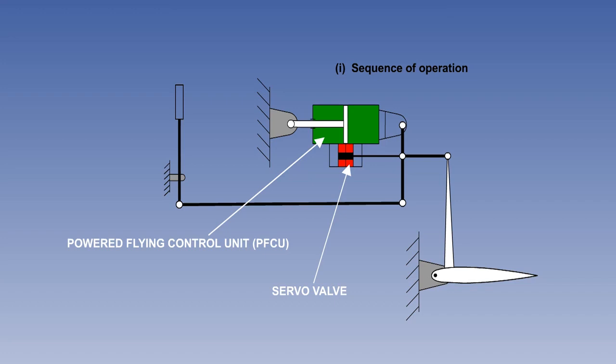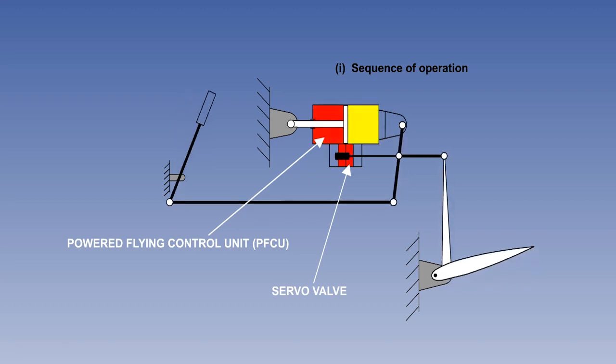These first few animations merely show the sequence of the operating principle. When the pilot moves the control column, you can see that both the control surface and the servo valve are moved. Movement of the servo valve provides a path for hydraulic fluid under pressure to one side of the PFCU piston and opens the other side to return.